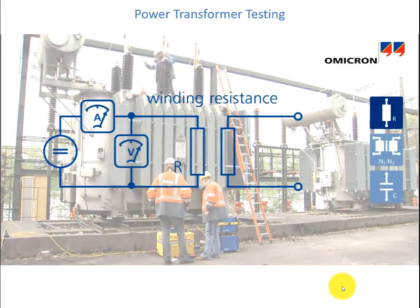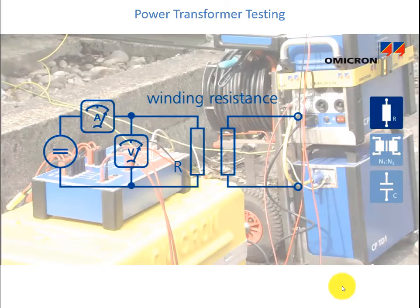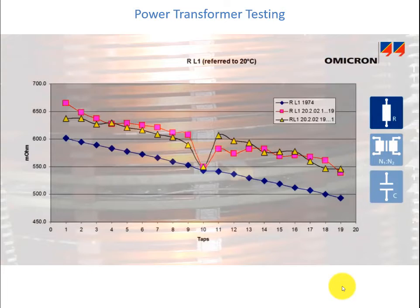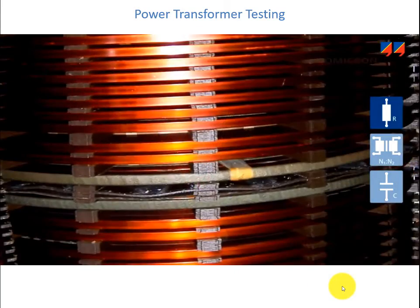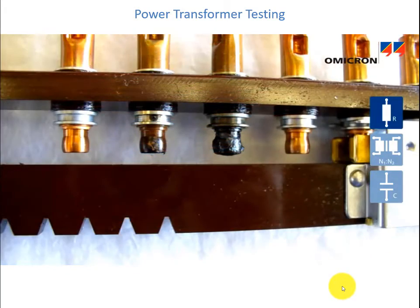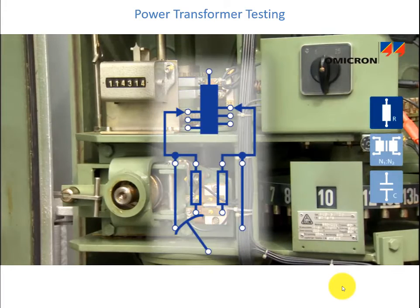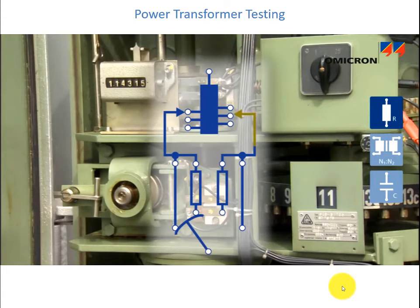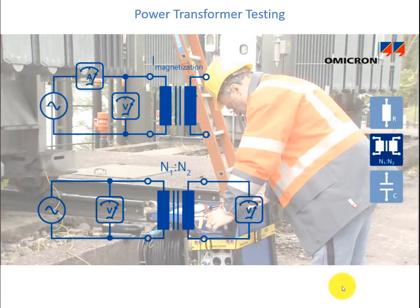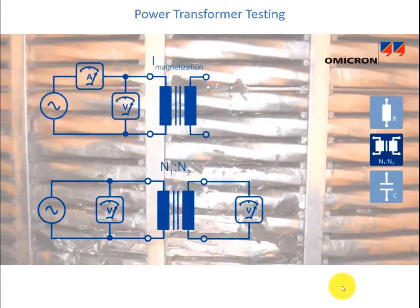Measuring the winding resistance and comparing it to factory measurements allows possible winding damage to be identified, for instance winding short circuits or contact problems of the winding leads or the tap changer. Measuring ratio and magnetization current helps to identify short circuits between winding turns.